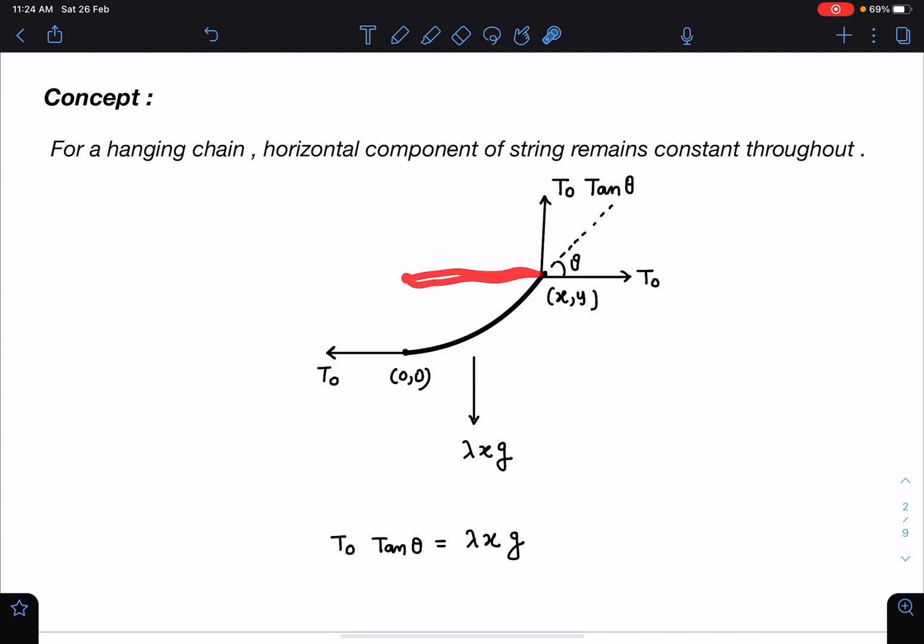Now here there might be confusion because I am writing this as λxg as if this is the length, but the thing is when this is released here from this position, the λ changes and total mass remains same. So I'm assuming here these points are falling directly vertically down.